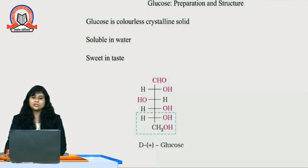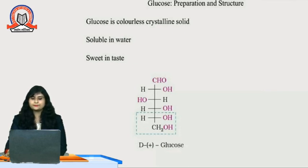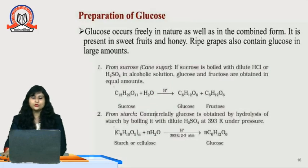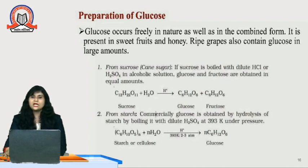You can see the structure here. It is a 6-carbon open chain structure where an aldehyde group (CHO) is present at the top and there are 5 hydroxyl groups on each carbon atom. Glucose occurs freely in nature as well as in combined form. It is present in sweet fruits and honey, and ripe grapes also contain glucose in large amounts. Sugarcane is also a best example of a glucose-containing source.